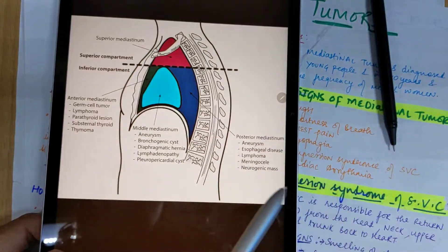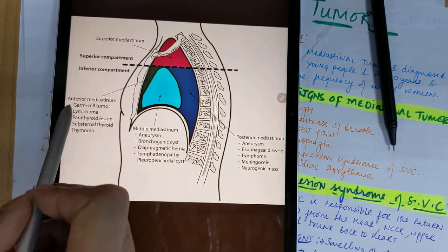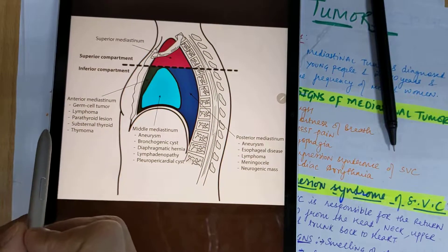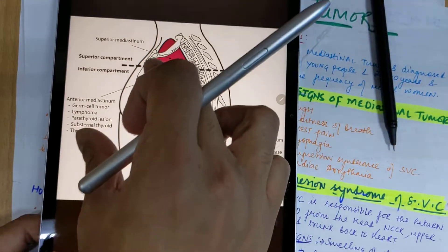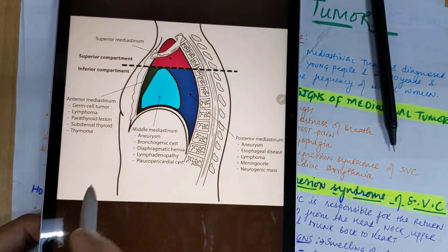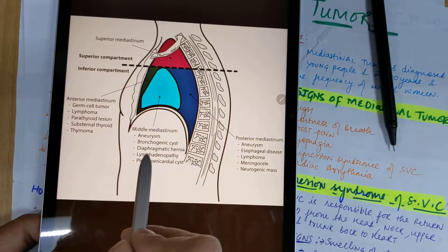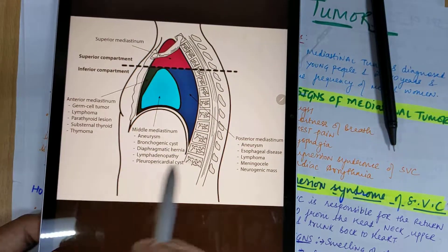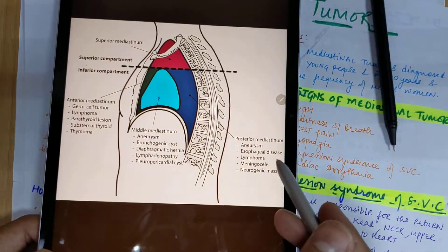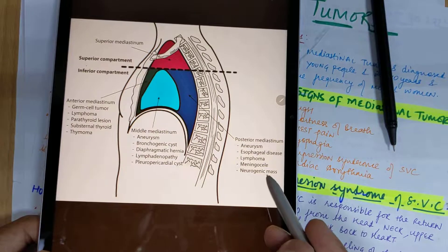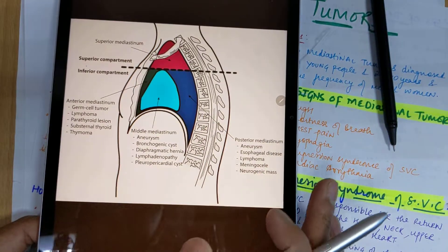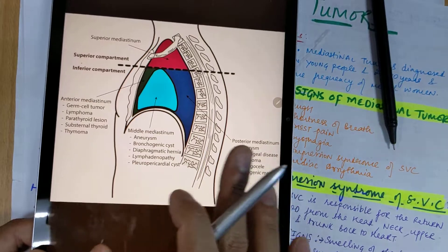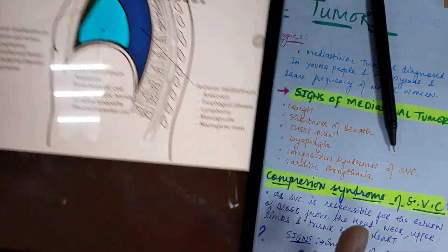In the anterior mediastinum you can see germ cell tumors, lymphomas, and thymoma. In the middle mediastinum there are aneurysms, bronchogenic cysts, and lymphadenopathy. In the posterior mediastinum you can see lymphomas, neurogenic masses, aneurysm, and esophageal disease.